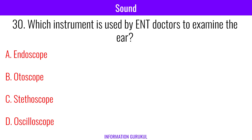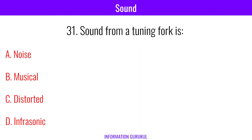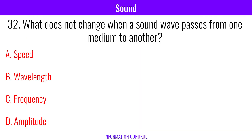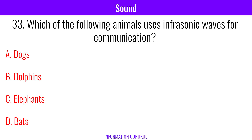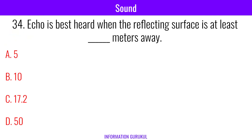Which instrument is used by ENT doctors to examine the ear? Otoscope. Sound from a tuning fork is musical. What does not change when a sound wave passes from one medium to another? Frequency. Which of the following animals uses infrasonic waves for communication? Elephants. Echo is best heard when the reflecting surface is at least 17.2 meters away.